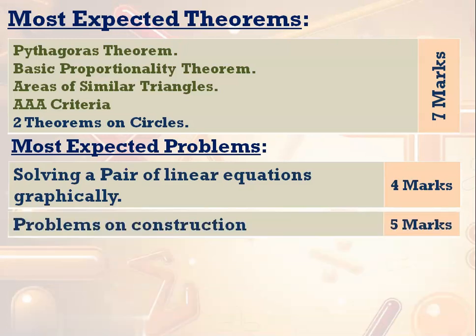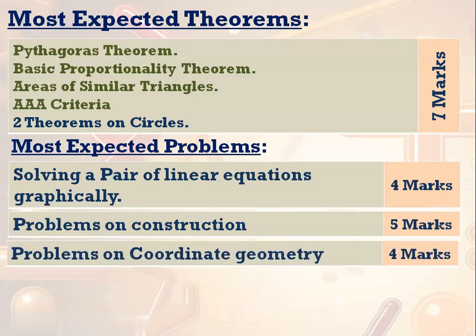The second most expected topic is construction, for 5 marks. Next, problems on coordinate geometry — very easy, worth about 4 marks. There will be 1 problem from the distance formula, 1 from the section formula and area. If you practice these 3 formulas, you will definitely get 1 mark and 1 three-mark question, which is why I have given 4 marks for coordinate geometry.